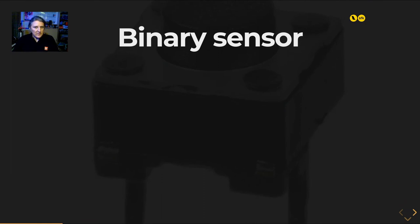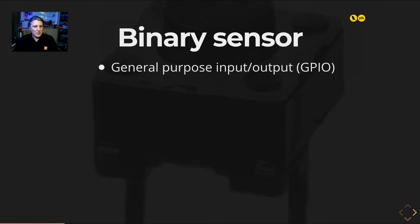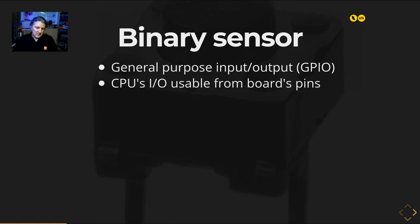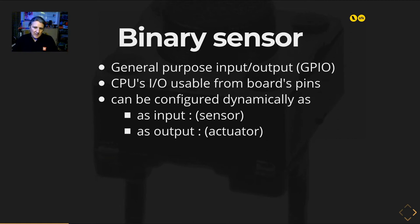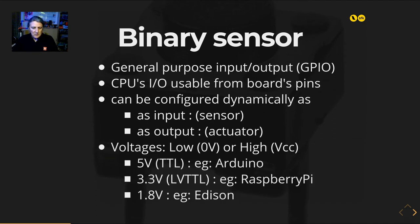Let's talk about the binary sensor using GPIO — General Purpose Input/Output pin. It's on the CPU itself and exposed to the board via the extension header on a Raspberry Pi, for instance. It can be configured dynamically as input (for a sensor) or output (for an actuator). It's only two voltage states: low or high. You need to be careful about voltage levels because you can break your board — be cautious using GPIO as output, as you can burn your component.